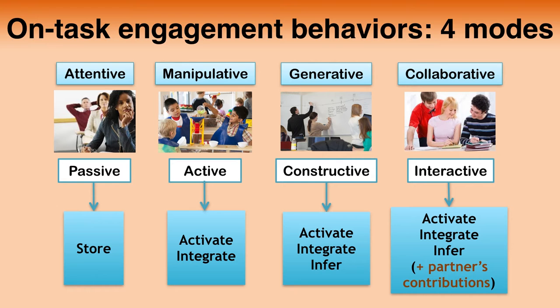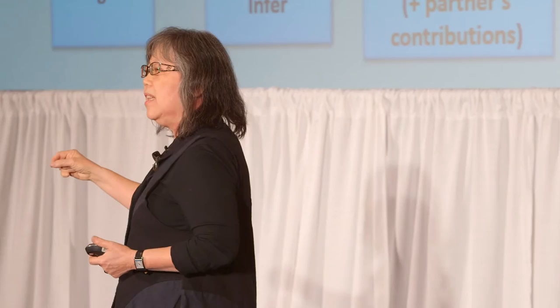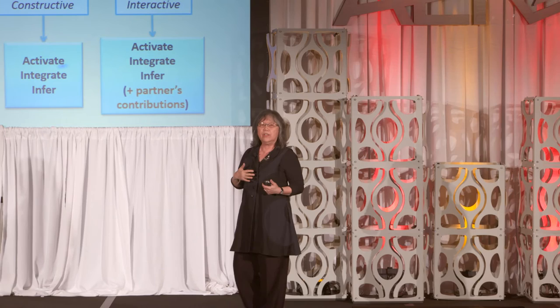The second mode is the manipulative mode, in which students are actually doing something with instructional materials, such as underlining or highlighting. They could be in a lab measuring or pouring. The unique feature of this mode is that you're physically manipulating something but not adding anything new. We call this the active mode. What the active mode does cognitively is that whatever you're manipulating — whatever sentences you're underlining — activates prior knowledge, allowing you to integrate new information with what you already know.